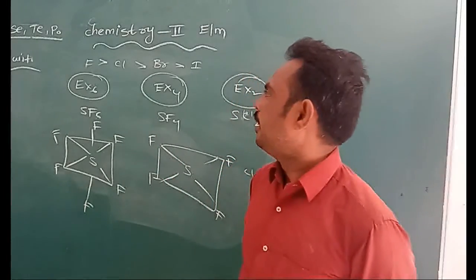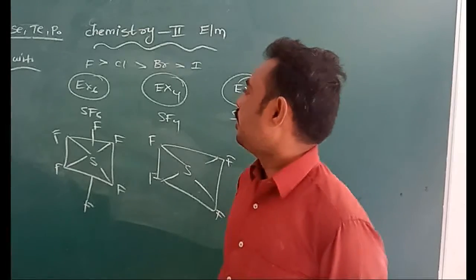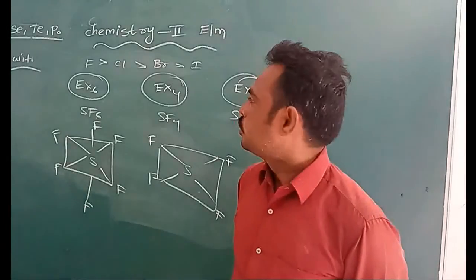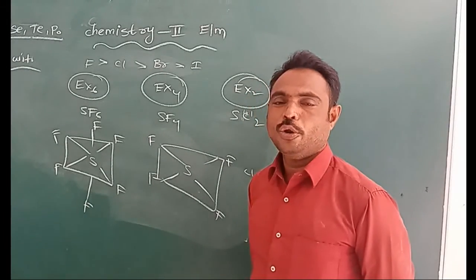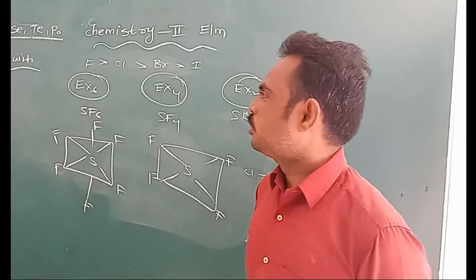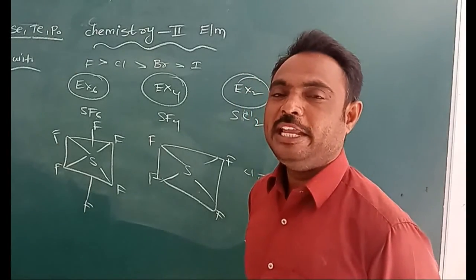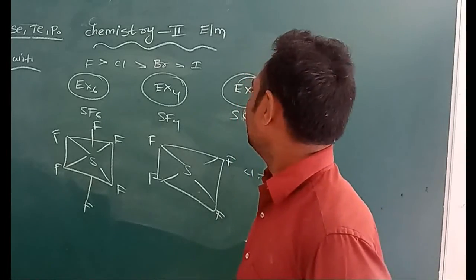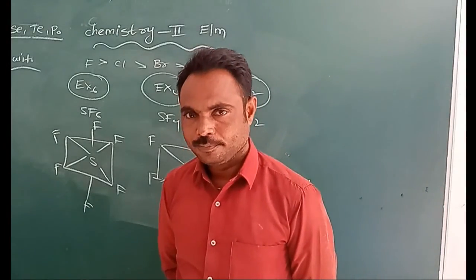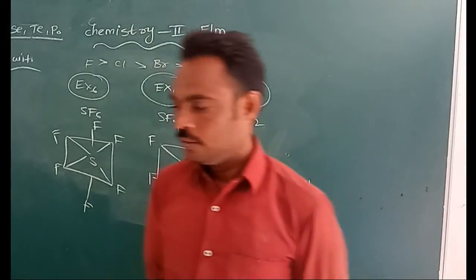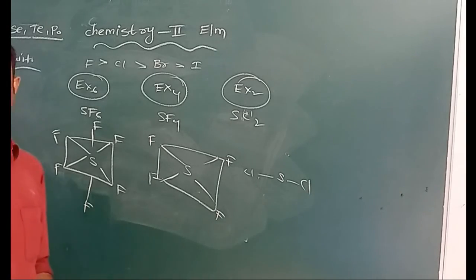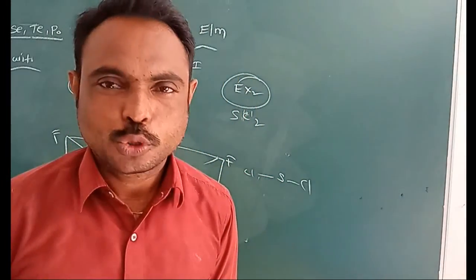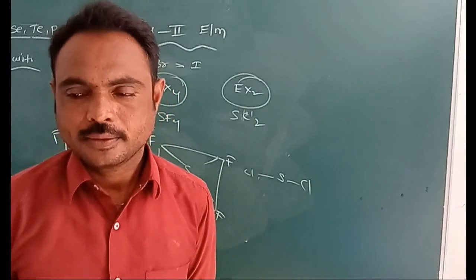So these 16th group elements react with halogens to form mainly three types of halides: EX₆, EX₄, and EX₂. Next, we will discuss the preparation of oxygen and the chemical properties of oxygen, followed by the preparation of ozone and the chemical properties of ozone. Thank you.